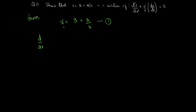The definition of a solution is: if a relation between the dependent and independent variable, when substituted into the differential equation, reduces it to an identity. So that differential equation should satisfy this relationship. If we are deriving the differential equation from this equation, then it definitely satisfies it. We can derive the differential equation by differentiating with respect to r and eliminating the two arbitrary constants.